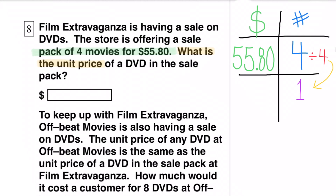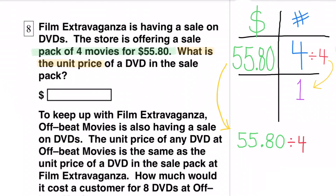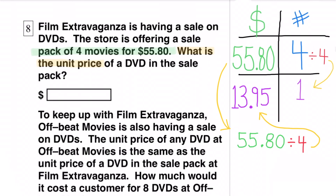In order to know the unit price, I need to divide 4 by 4 to get 1 DVD, and I need to divide $55.80 by 4. $55.80 divided by 4 is $13.95. The unit price for one DVD at Film Extravaganza is $13.95.